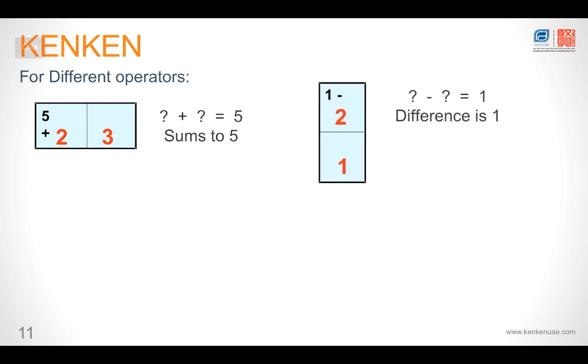This one here has 1 minus. What does this mean? It means you have to subtract two numbers and the answer has to be 1. So 2 and 1 is our answer. So 2 minus 1 gives you 1. Similarly, in this one, it is 3 division. It would mean that we have to divide two numbers to get 3. So the only option we have is 3 divided by 1.